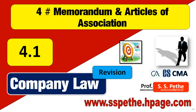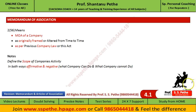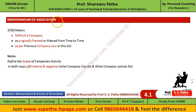Now we are starting chapter number 4, Memorandum and Articles of Association, part 1. First we will see the provisions of Memorandum of Association. Remember that Memorandum of Association is the main document of a company. Just like the Constitution is the main document of India, so Memorandum is the main document of a company.